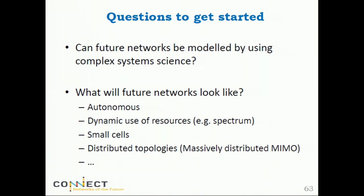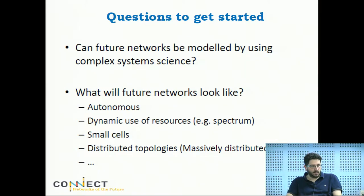We saw earlier a definition of a complex system: things like self-organization — being autonomous in decisions — dynamical systems that change with respect to the environment, the concept of feedback loops, and nonlinear input-output relations. Decision-making for a complex system is distributed — you don't have a central unit telling the rest of the system what to do; parts of the system independently decide what to do.